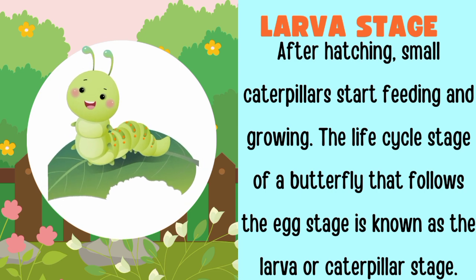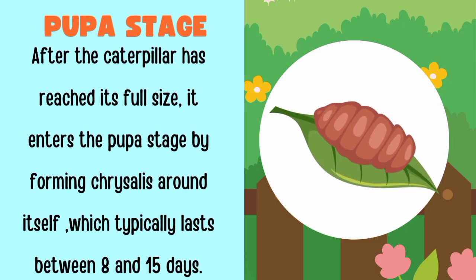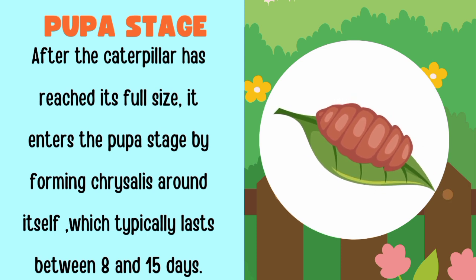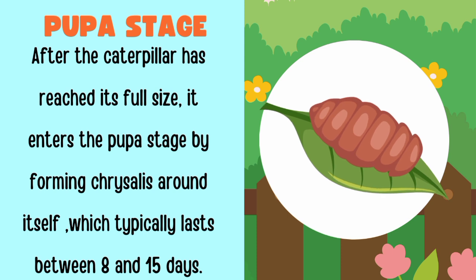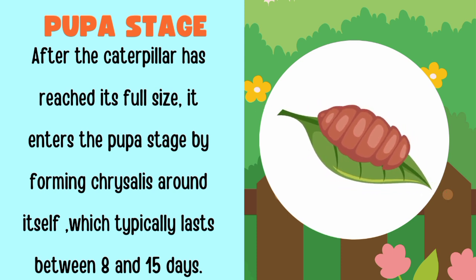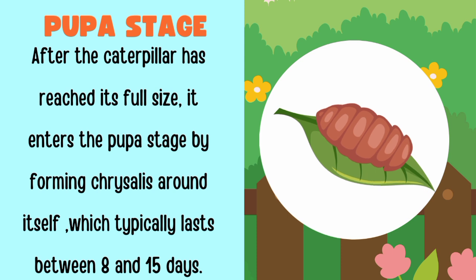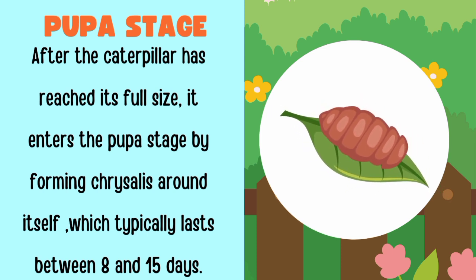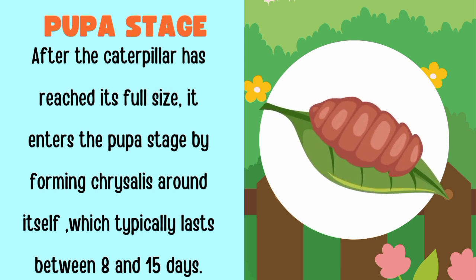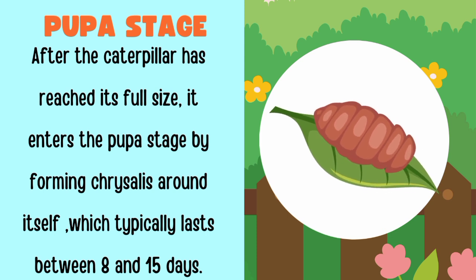The third stage is called the pupa stage. When the caterpillar reaches its full size, it enters the pupa stage by forming a chrysalis around itself, which takes 8 to 15 days.